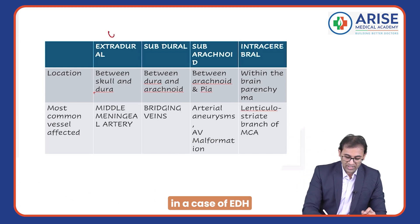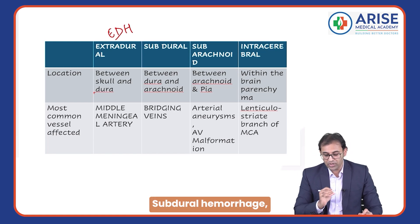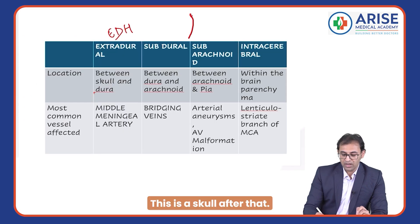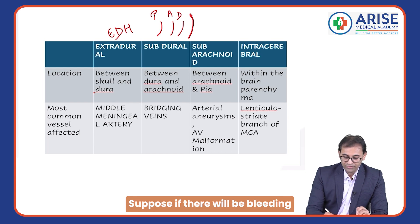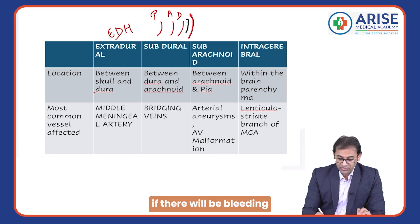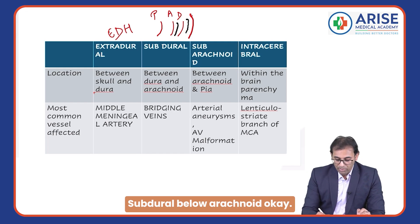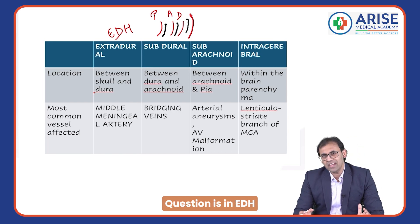Lucid interval is seen in a case of EDH — extra dural hemorrhage. Let's review the anatomy: after the skull, we have the pia mater, arachnoid mater, and dura mater. If there is bleeding just above the dura mater, it is EDH. If there is bleeding below the dura mater, it is subdural. Below the arachnoid mater, it is called subarachnoid hemorrhage.